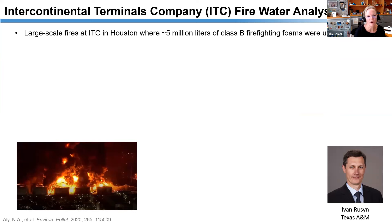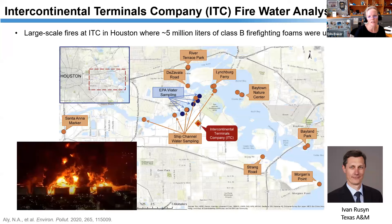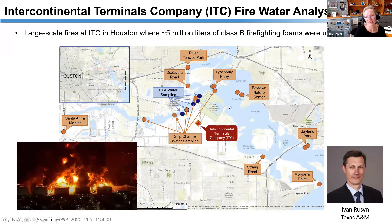We also worked on the Intercontinental Terminal Company fire in Houston — a huge chemical fire that required importing five million liters of aqueous film-forming foam (AFFF) to extinguish. The fire was near Galveston Bay. We took water samples to monitor contamination. At the time of the fire, PFAS levels were very high, then mainly cleared within three months near the fire site. However, further into Galveston Bay we still saw high levels — the PFAS were diluting from the source and spreading to other areas.